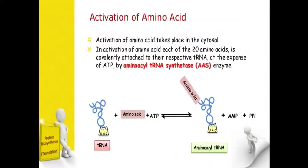The first stage is activation of amino acids. Amino acids are initially in an inactivated form present in the cytosol and are not useful for protein synthesis in this state. These amino acids are activated by consuming energy in the form of ATP and are then attached to tRNA, forming an aminoacyl-tRNA complex. This reaction is catalyzed by the enzyme aminoacyl-tRNA synthetase. The amino acid is now in activated form and ready for protein synthesis.